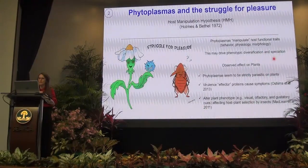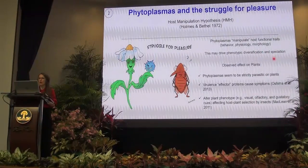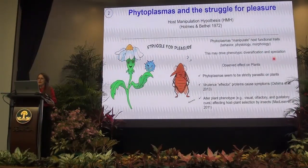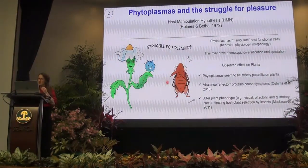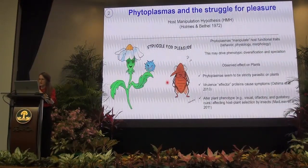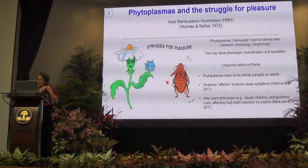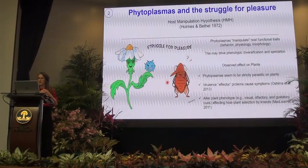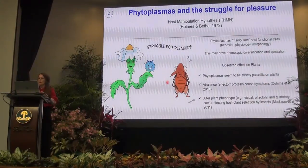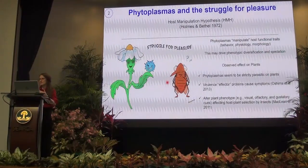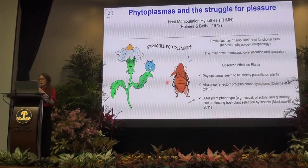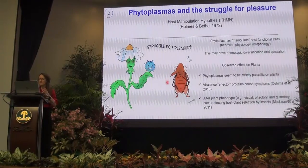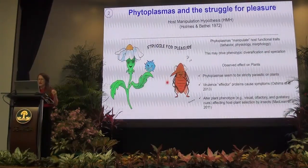Long ago, in 1972, they proposed the host manipulation hypothesis. I generated a metaphor for phytoplasmas which I call the 'struggle of pleasure,' an extension of Darwin's 'struggle for survival.' This metaphor is used because it's easy to get the message, but behind it is the formally formulated host manipulation hypothesis. According to this metaphor, phytoplasmas are able to manipulate host functional traits; for plants we know they induce virulence effector proteins that cause various symptoms, alter phenotype, and affect host plant selection by insect vectors.